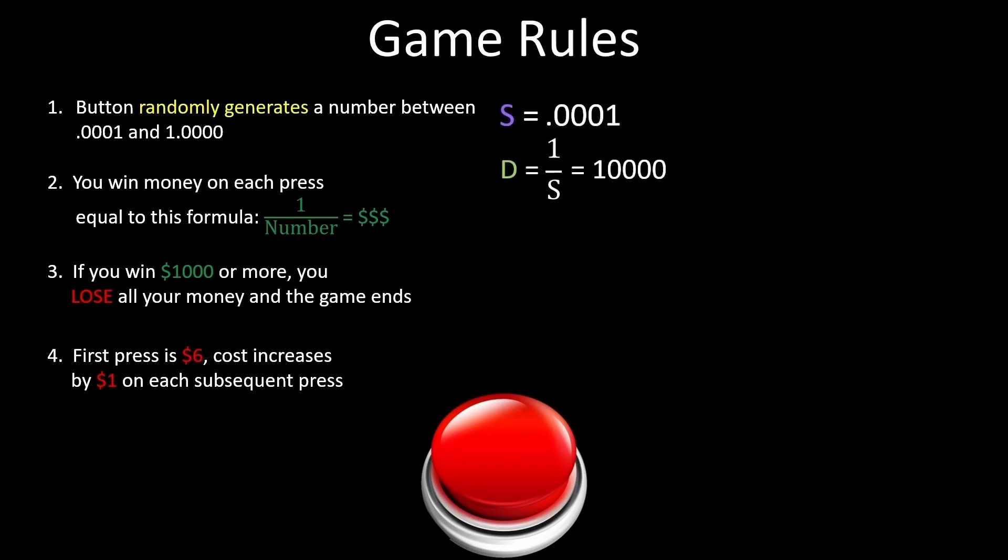Now that we know how many different outcomes there are, we can find probabilities by figuring out how many of those 10,000 outcomes result in a specific dollar amount. On almost all the numbers, this probability is equal to 1 over d. To illustrate, imagine you got a number .0125. This is the only number that will give you $80 because .0124 gives you slightly more and .0126 gives you slightly less.